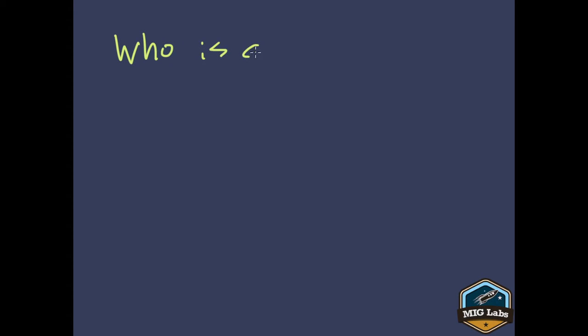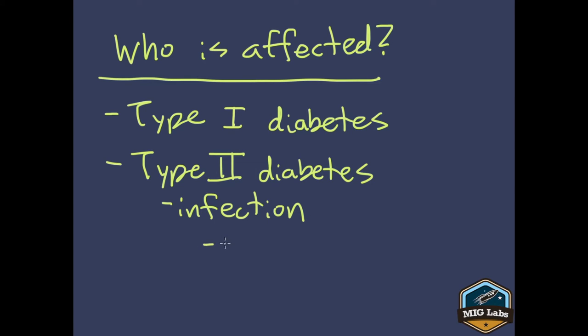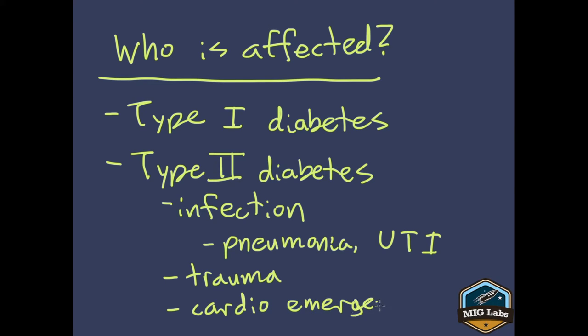So who suffers from DKA? Who is affected by DKA? It's primarily type 1 diabetics, or it's also sometimes called juvenile onset diabetes. So people who have type 1 diabetes are most commonly affected by DKA. It's also possible in type 2 diabetics. And usually people with type 2 diabetes are more likely to suffer from DKA with a couple conditions. So one of them is infection, and very often that's pneumonia or a urinary tract infection or UTI. Also in trauma, and if they have cardiovascular emergencies or other sorts of major emergencies.